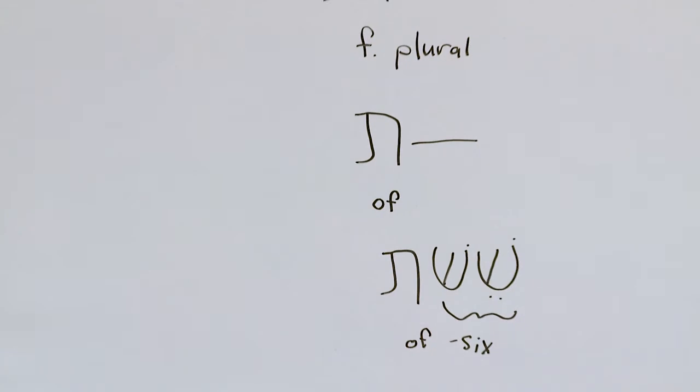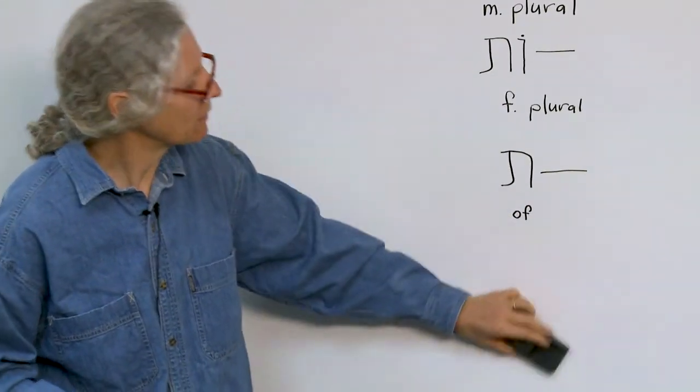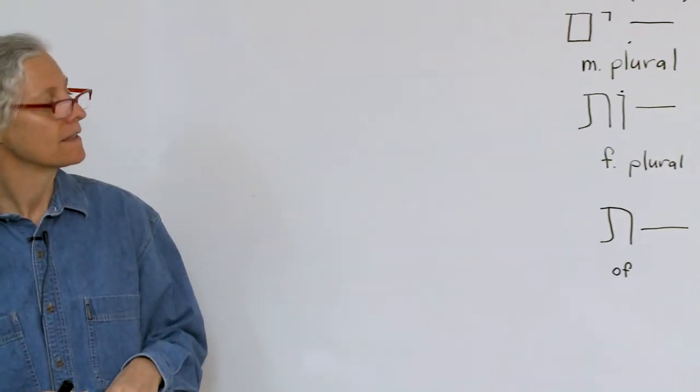So frequently, not always, there are always exceptions. That's the one thing about the Bible. There are always exceptions to the rules. Okay? But frequently, when you see the tav at the end, it means of.